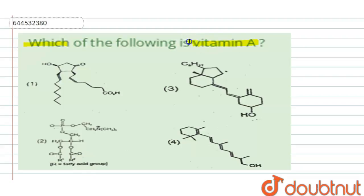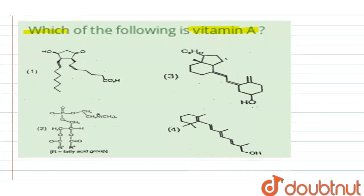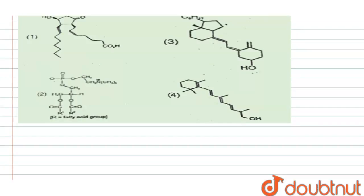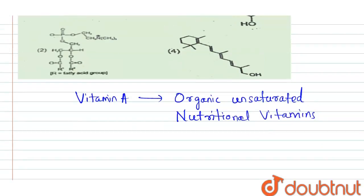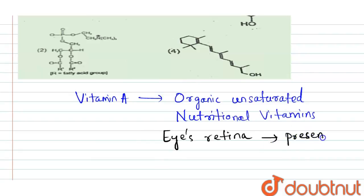We know Vitamin A is an organic unsaturated nutritional vitamin. Vitamin A is generally present in the retina of the eye, so Vitamin A is present in the eye's retina.